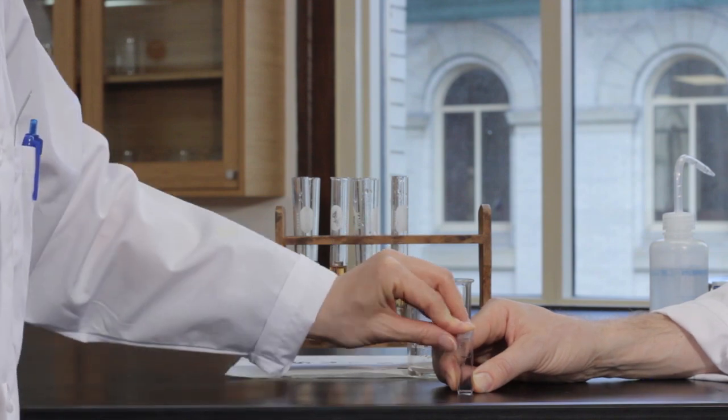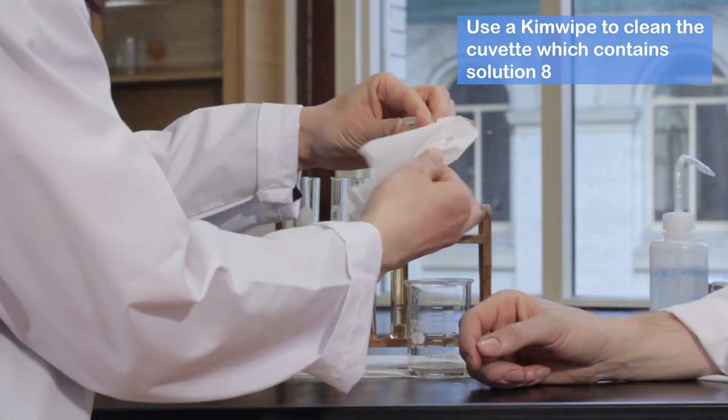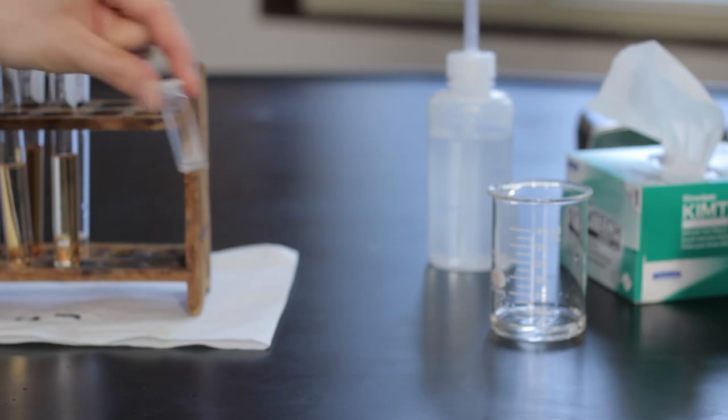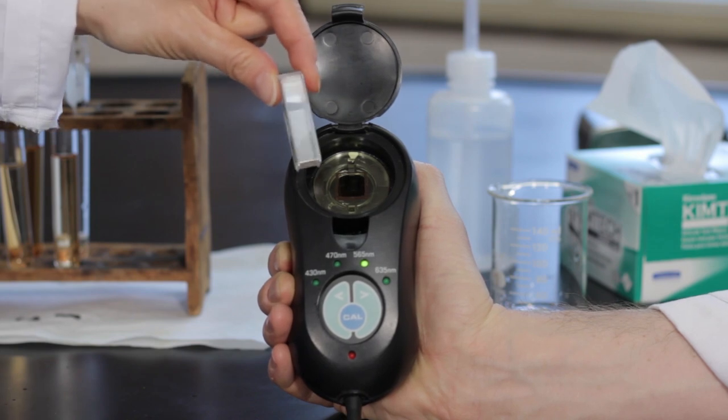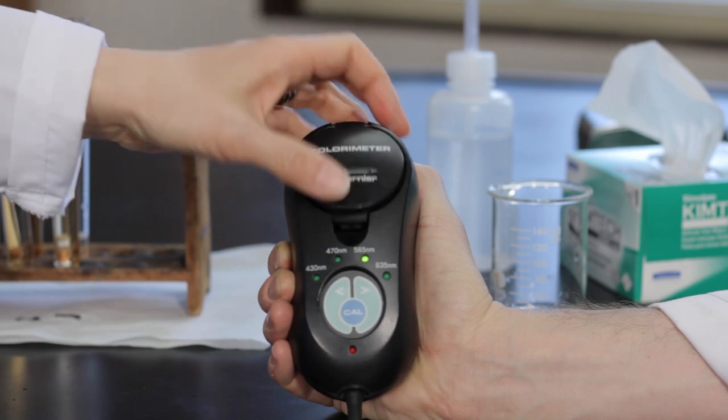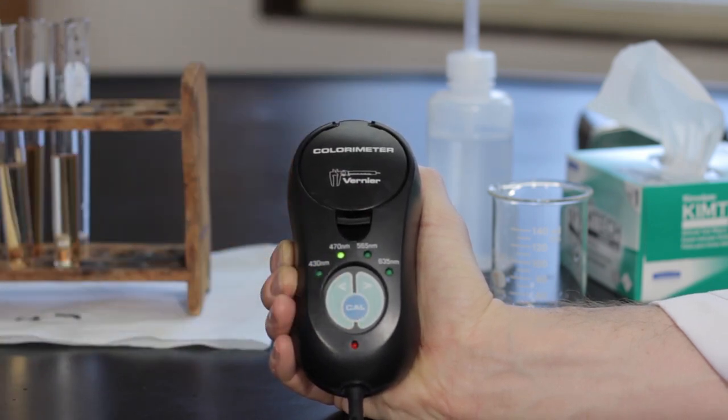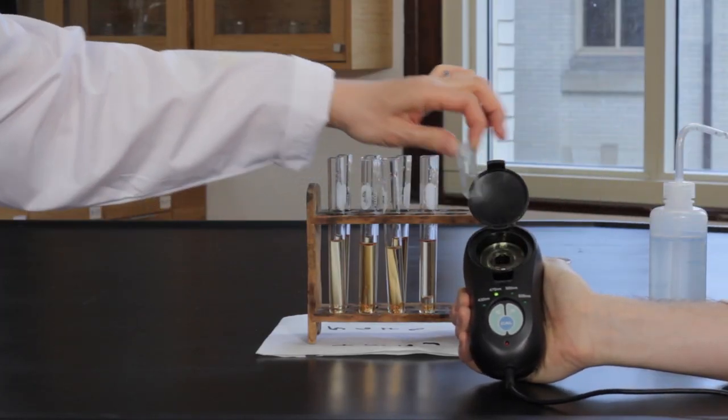Always cap the cuvette before inserting it into the colorimeter. Open the Logger Pro program and the appropriate file for the experiment. The colorimeter must now be calibrated. The cuvette must be clean and dry. Make sure to position the cuvette so that one of its clear faces is directed toward the white reference mark on the colorimeter. Use the two arrows to set the light wavelength to 470 nanometers. Press the cal button and a red light will blink ten times. The colorimeter has now been calibrated.